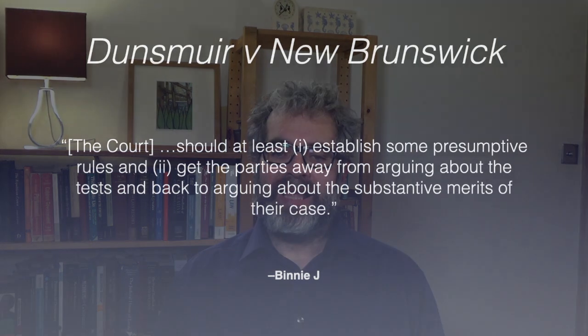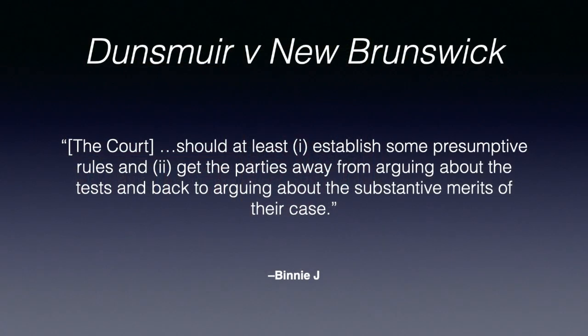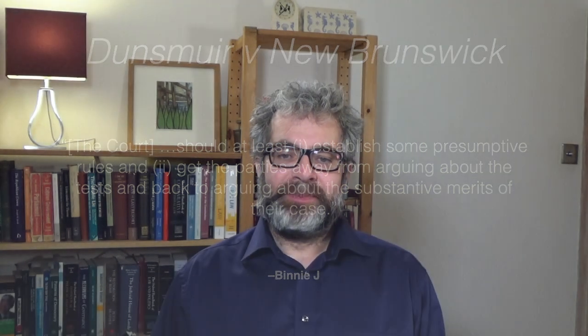One of the dissenters in Dunsmuir, Justice Binnie, was very critical of the majority for its attempt to finesse the standard of review analysis. He spoke of the need to establish some presumptive rules and secondly to get the parties away from arguing about the tests and back to arguing about the substantive merits of the case. Particularly in respect of the second of these, this is something that Dunsmuir failed to do by all accounts. This is where the story of Dunsmuir ends and the story of Vavilov begins.